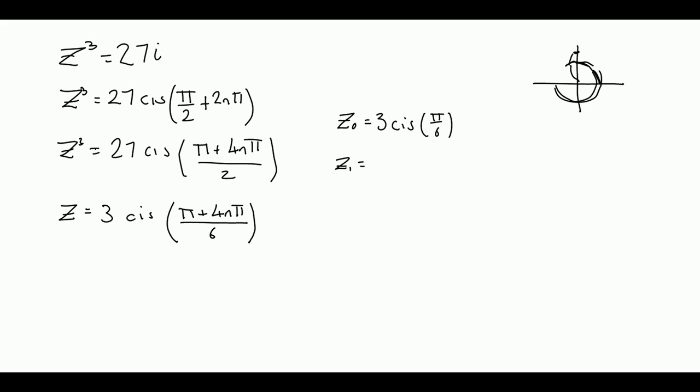And then they've got to be consecutive, so that's z₁, which is going to be 3 cis. So 4 times 1 is 4, 4π plus π, that's 5π/6.